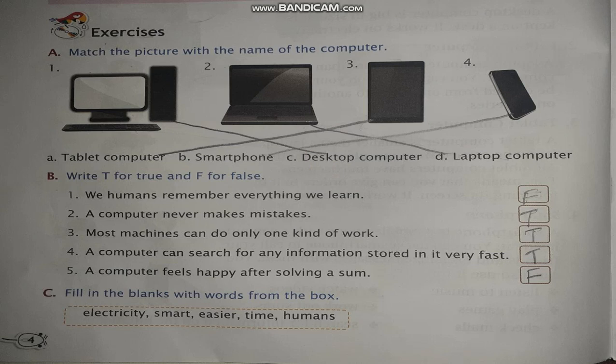Write T for true and F for false. First: 'We humans remember everything we learn' — False, because we can't remember everything. Second: 'A computer never makes mistakes' — True. Third: 'Most machines can do only one kind of work' — True. Fourth: 'A computer can search for any information stored in it very fast.' Fifth: 'A computer feels happy after solving a sum' — False, because a computer can't feel anything.